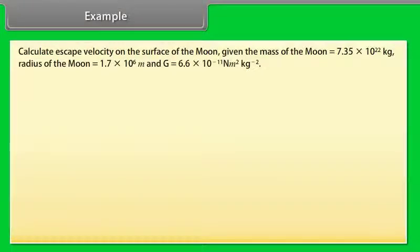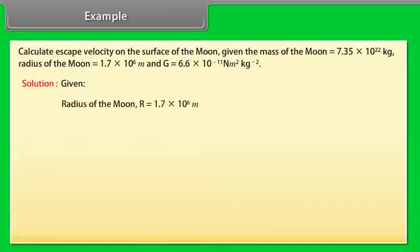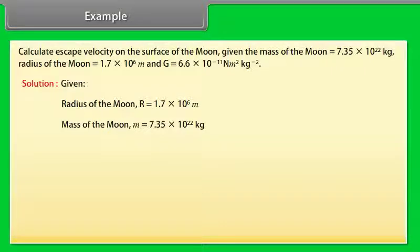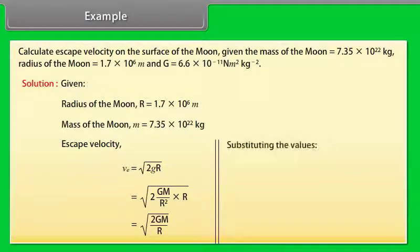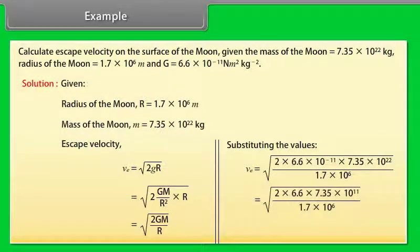Example: calculate the escape velocity on the surface of the moon. Given: radius of the moon r = 1.7 × 10⁶ m, mass of the moon m = 7.35 × 10²² kg. Escape velocity = √(2Gm/r). By substituting the values, escape velocity = 2.4 × 10³ m/s.